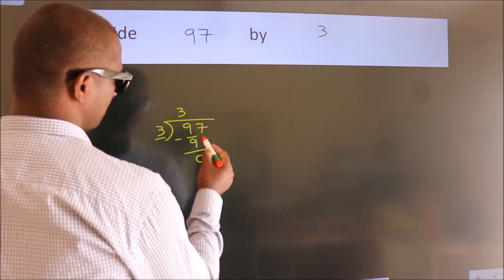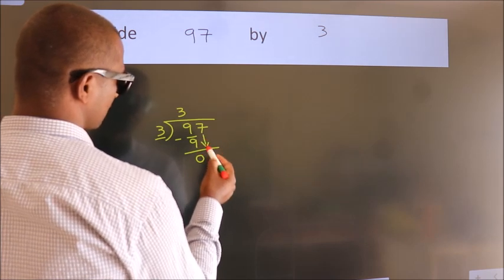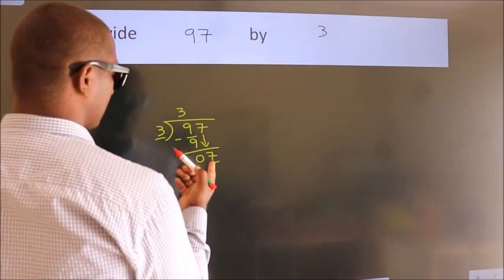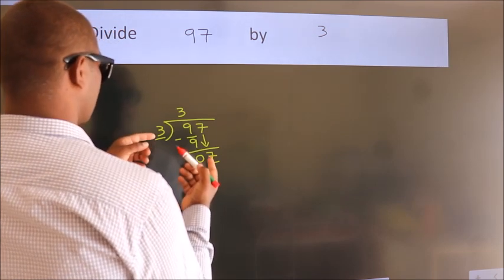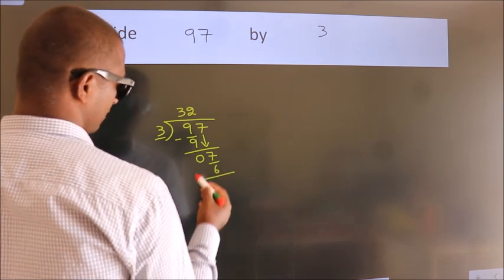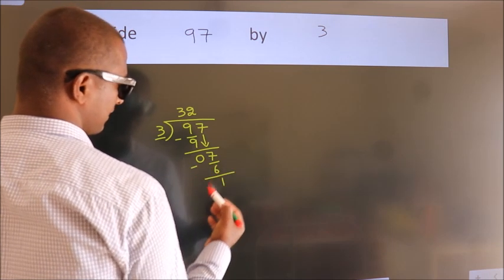After this, bring down the next number. So 7 down. So 7. A number close to 7 in 3 table is 3 times 2 is 6. Now we subtract. We get 1.